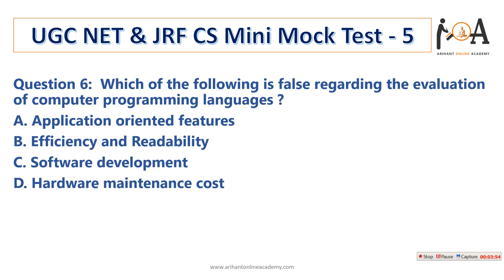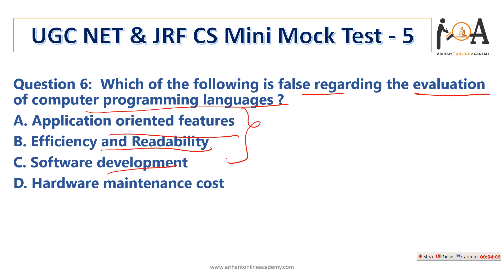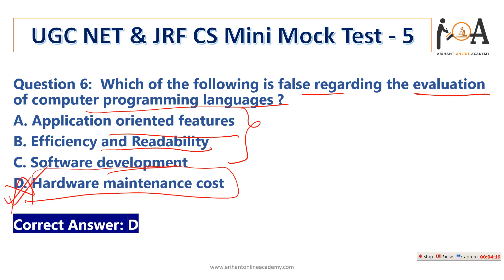The next question: which of the following is false regarding the evaluation of computer programming languages? Application-oriented features, efficiency and readability, and software development — options A, B, and C — are all part of evaluating programming languages. However, hardware maintenance cost is out of scope for programming language evaluation. So option D is the correct answer for question number 6.